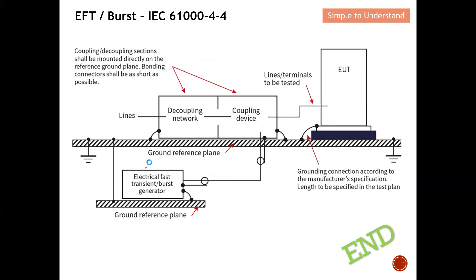The equipment generates the electrical fast transient or burst, and couples the disturbance onto a coupling/decoupling device. The decoupling device prevents the noise source from reaching your supply lines — for example, if I supply 230V power to my DUT, the noise we generate should not reach the power line. The decoupling network stops the noise from entering the supply lines, so power flows in only one direction and the noise effect is coupled onto the power source. We then observe whether our EUT can still function under this disturbance.